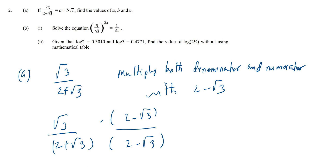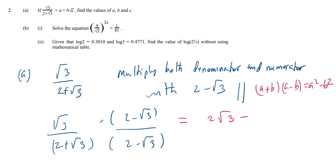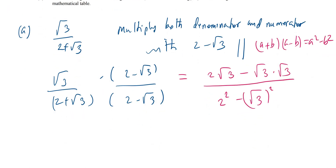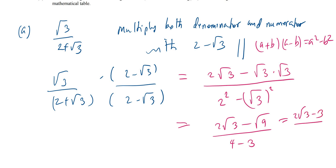We're going to use the difference of two squares concept — (a + b)(a − b) = a² − b². So this equals (2√3 − √3 × √3) over (2² − (√3)²), which gives 2√3 − √9 over 4 − 3, simplifying to (2√3 − 3) over 1.